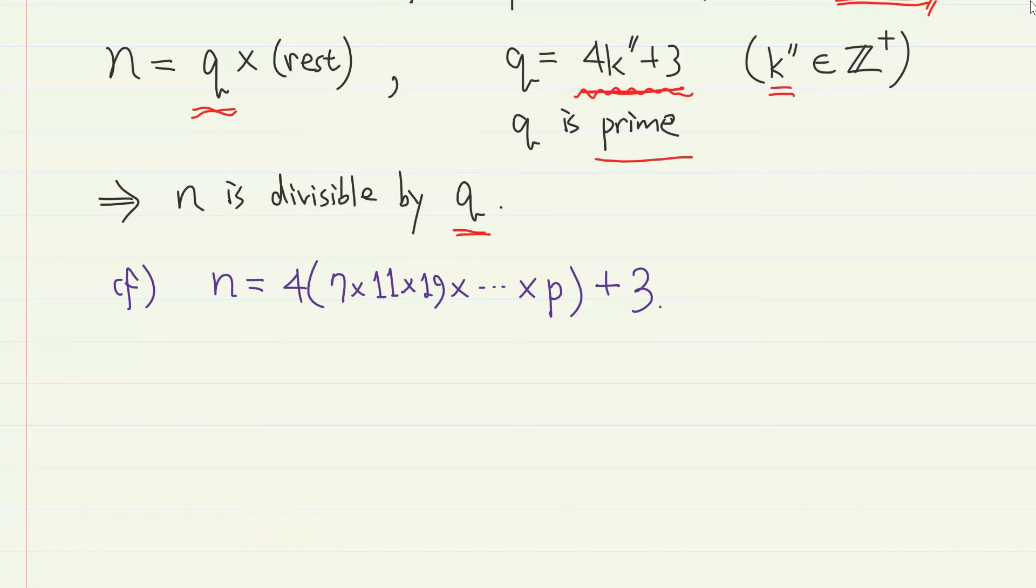However, from our definition of n, you can clearly notice that first, n is not divisible by 3 because we do not have 3 here. Moreover, n is not divisible by 7, the next prime number of the form 4k plus 3, because this 3 right here is not divisible by 7.